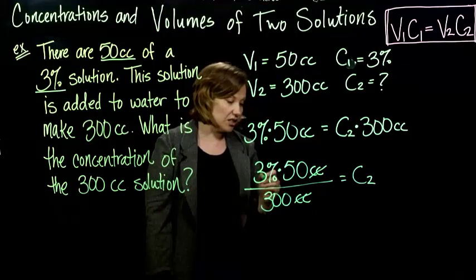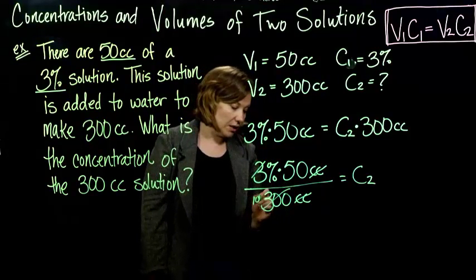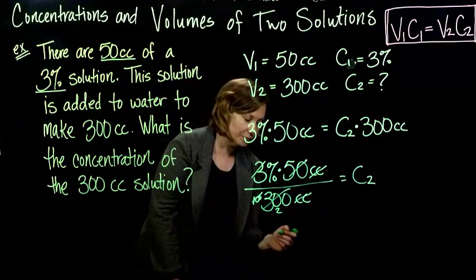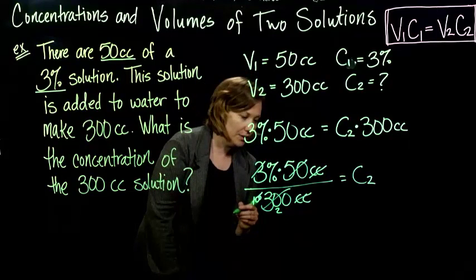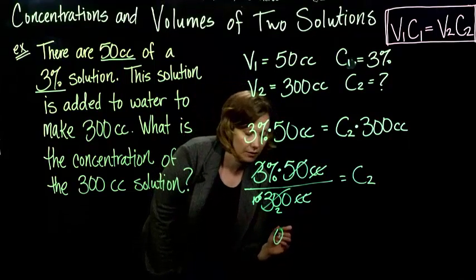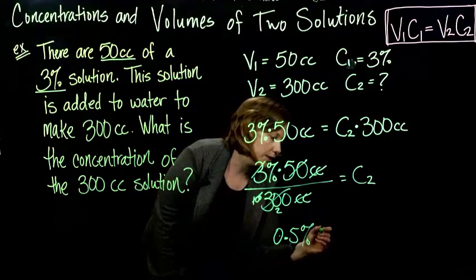Your cc's are going to cancel, right? And you could reduce the fraction, you would reduce this guy, and 50 goes into 100 twice. So you end up with a pretty small number, you end up with a half a percent. So 0.5%.